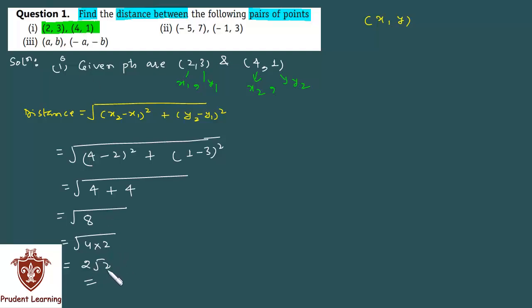Let's see the second section of the same question. The given points are minus 5,7 and minus 1,3. We are given minus 5,7 and minus 1,3.